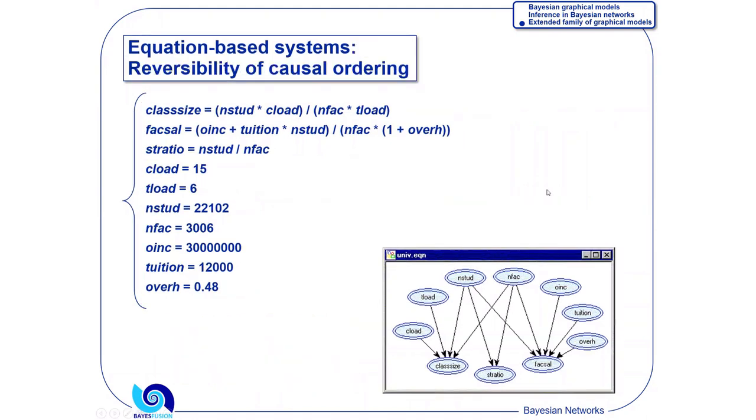Here is an example of prediction of the effects of manipulation. This system describes a university, money flow in a university. Student-teacher ratio, number of students divided by the number of faculty. Faculty salary is the tuition payment times the number of students plus other income. Every equation corresponds to a node plus its parents, a family. So number of students, number of faculty and student-teacher ratio, the three are involved in an equation.